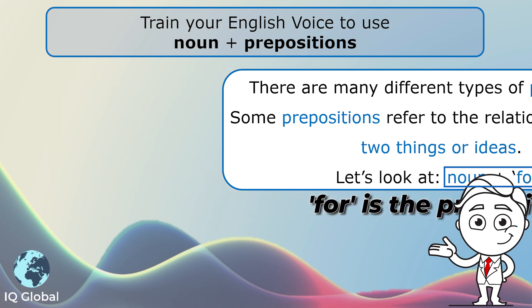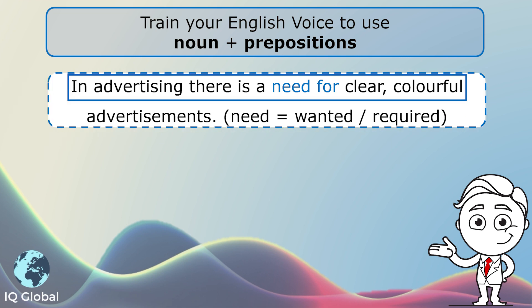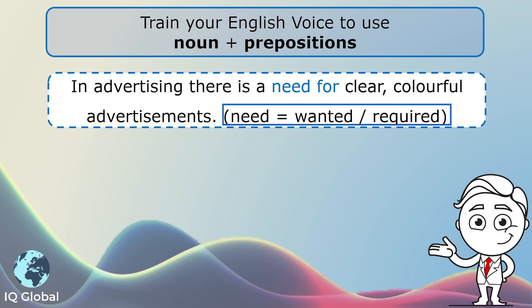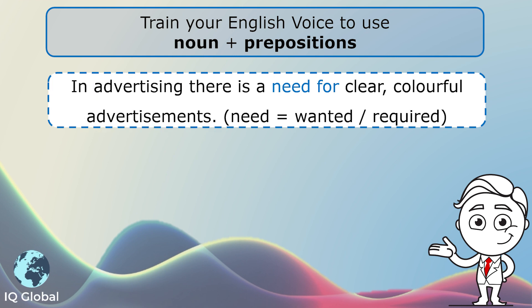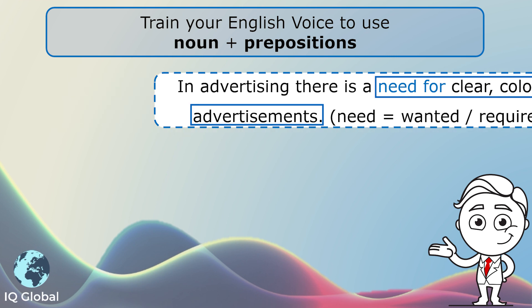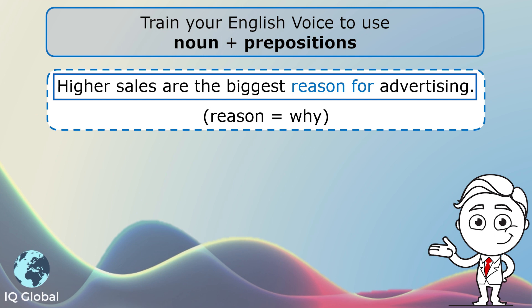Sentence one: in advertising, there is a need for clear, colorful advertisements. 'Need' is the noun — it means something is wanted or required. Here we are looking at the relationship between advertising and advertisements, and the need for clear, colorful advertisements.